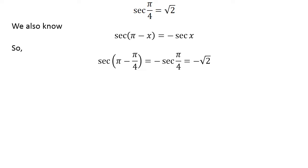So sec(π - π/4) = -sec(π/4) = -√2. As π - π/4 = 3π/4, we have sec(3π/4) = -√2.